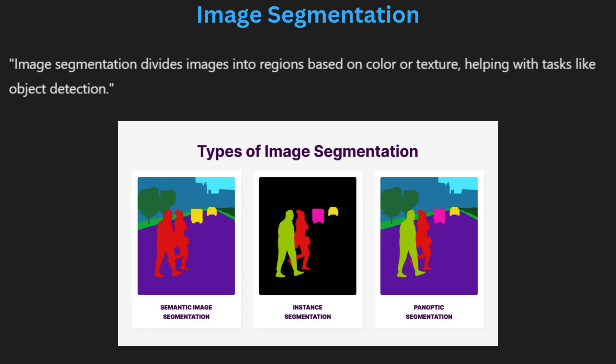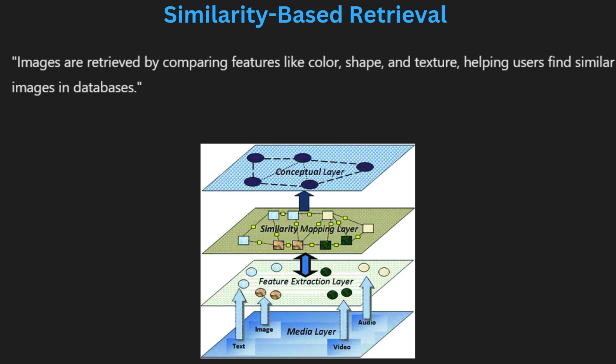Image segmentation is the technique of dividing an image into distinct parts, making it easier to analyze and interpret. The goal is to simplify the image by isolating meaningful areas such as objects or regions of interest. This can be done based on features like color, texture or boundaries. In practical terms, segmentation is used for tasks like face detection, object recognition and medical imaging. Techniques like edge detection, thresholding or clustering are commonly used for segmentation, allowing multimedia systems to retrieve more accurate and specific image information.